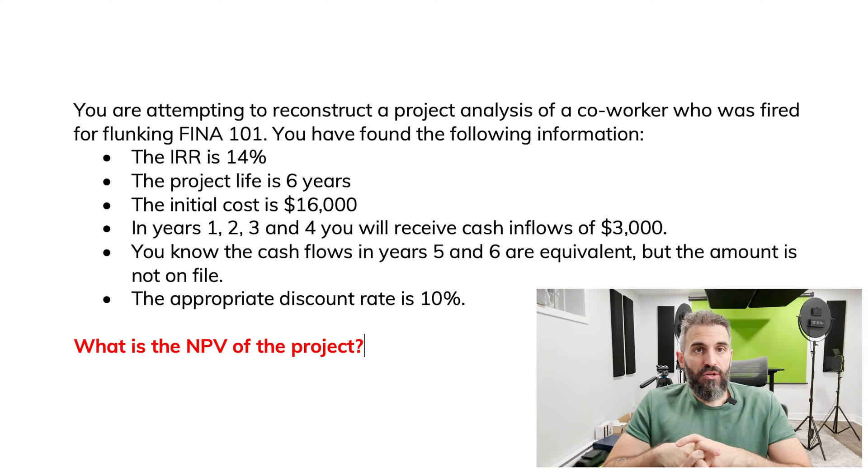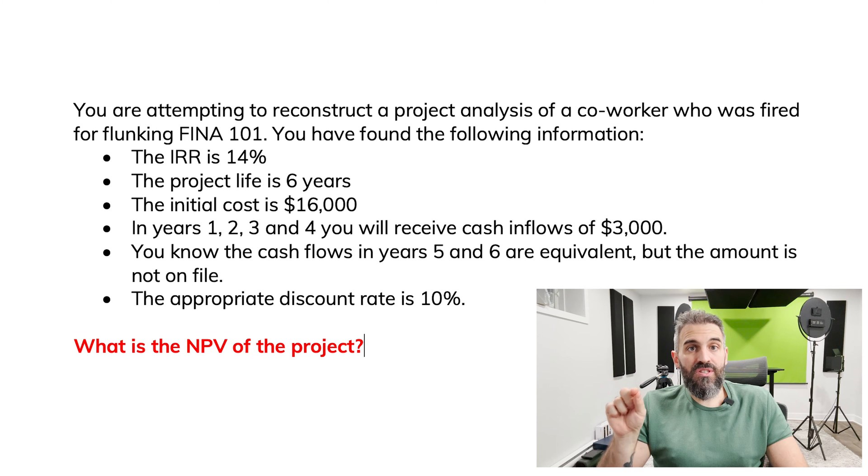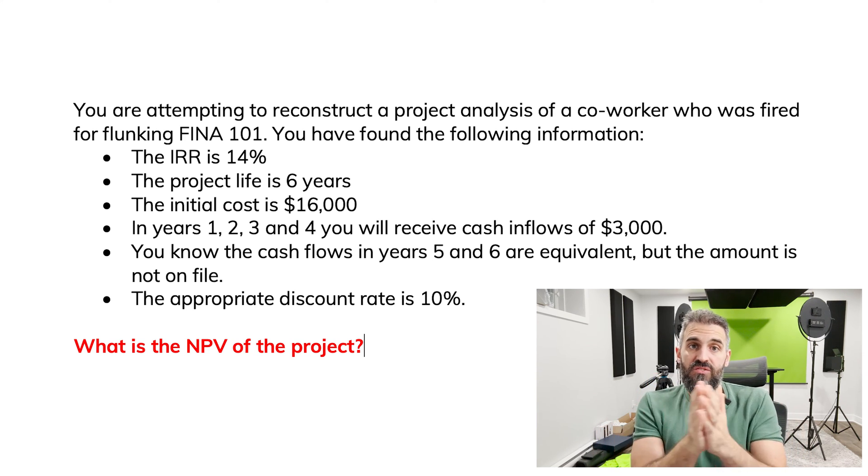In the first part of the video, you'll see me set up my net present value calculation where I discount all the cash flows, including the two unknowns by setting them as x. But I'll set the net present value equal to zero. Now the reason I do that is because I'm using the internal rate of return as the discount rate, and we know that if the discount rate is the internal rate of return, then the net present value is zero.